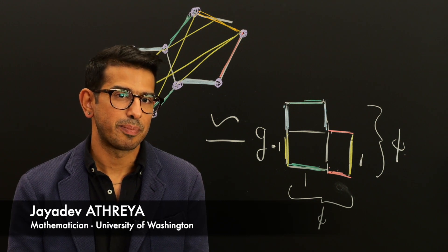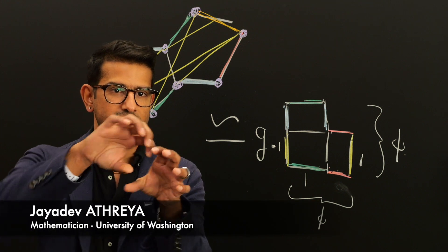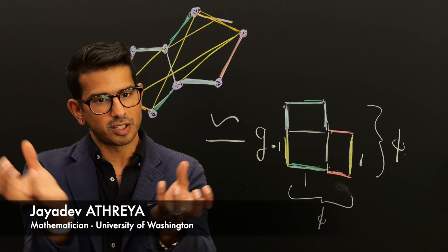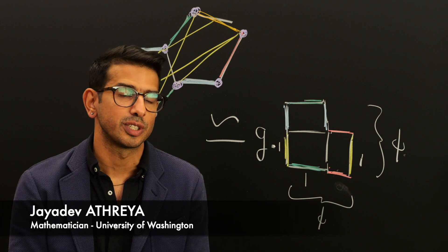So really, Pac-Man isn't happening on a square. The left and the right side are glued, so you have a tube. Then the top and the bottom are glued, so you have what's called a torus or a donut.